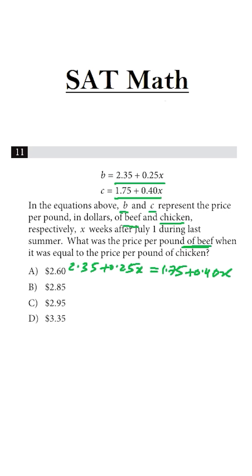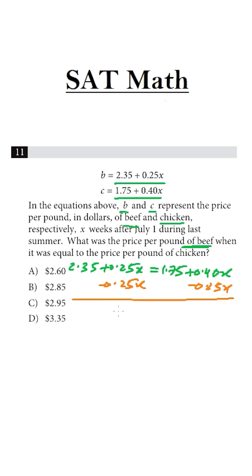Let's bring the X values to one side. Subtract 0.25X from both sides — it will become 2.35 is equal to 1.75 plus 0.15X.